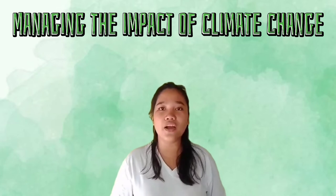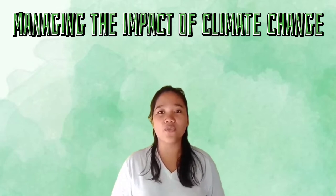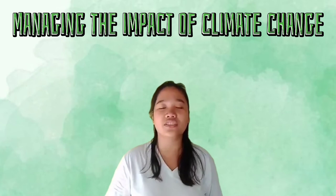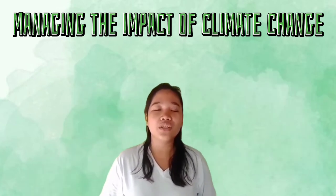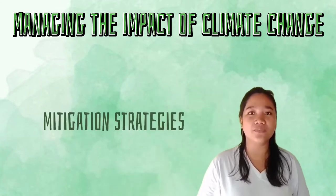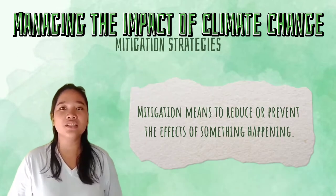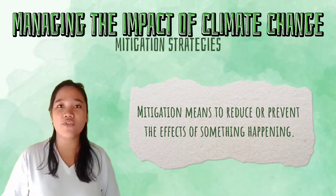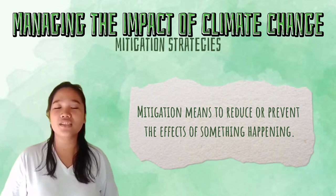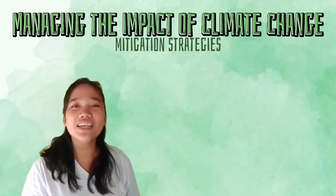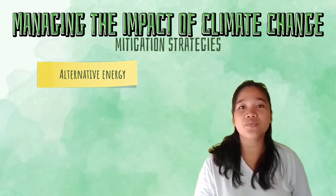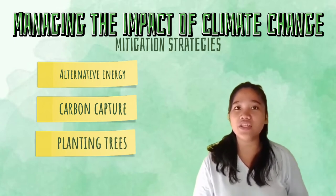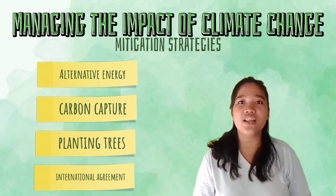Let's move on to how to manage the impact of climate change. There are two strategies: mitigation and adaptation. Mitigation means to reduce or prevent the effect of something that is happening. Mitigation strategies for global warming include alternative energy, carbon capture, planting trees, and international agreements.